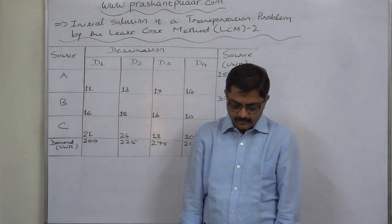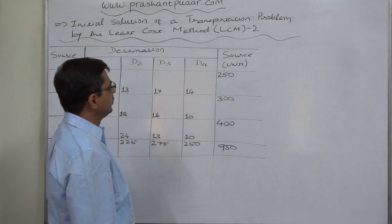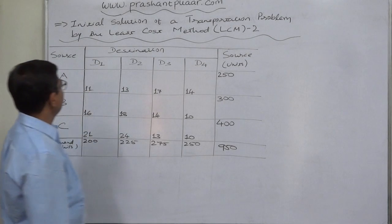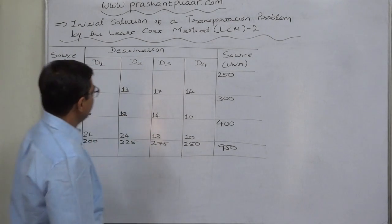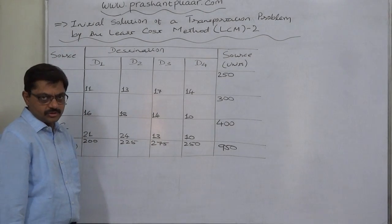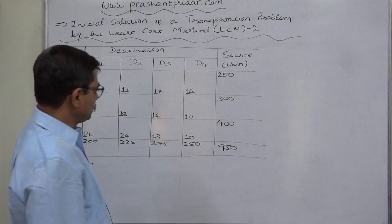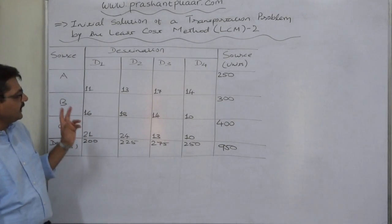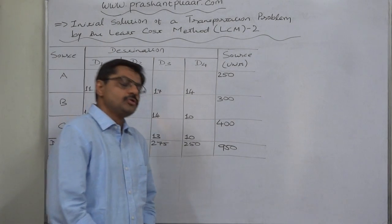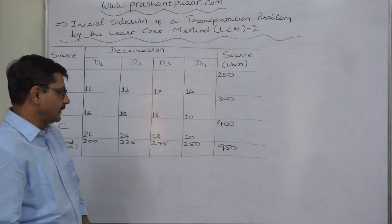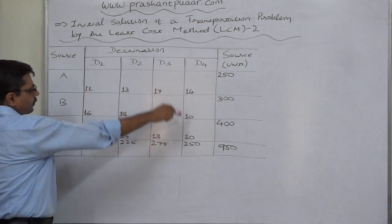Hello friends, welcome back. Let us take one more case of a transportation problem. We are again going to use the Least Cost Method (LCM) to get the initial solution. In the Least Cost Method, we make an allocation in the cell with the lowest possible cost, irrespective of the geographical location of the cell.